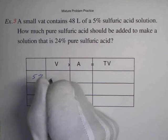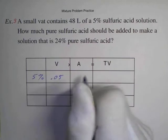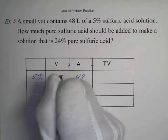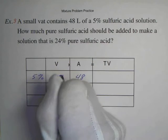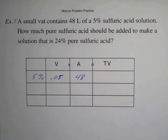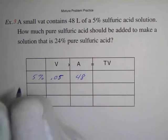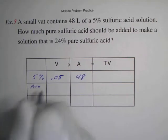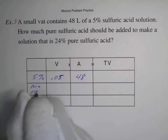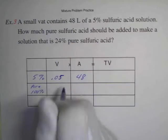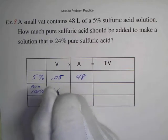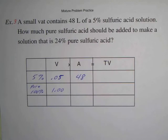So the value of 5% must be 0.05 and I've got 48 liters. So fill that in, and we want to add pure sulfuric acid. That's going to be 100%, so the value of that would just be 100% or 1.00, and we want to know how much we're going to be adding to that, so we can call that x.